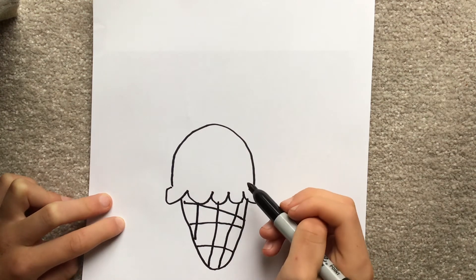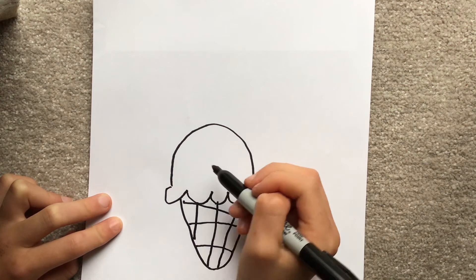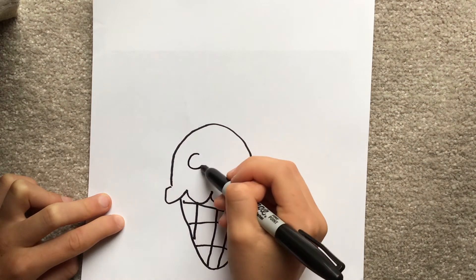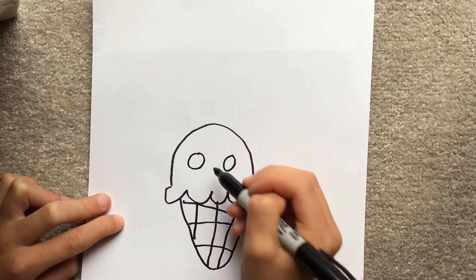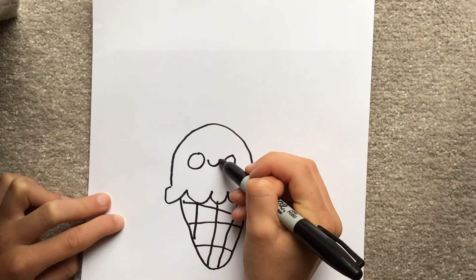What are we missing? Eyes and a mouth. Two equal eyes. A mouth with a little tongue.